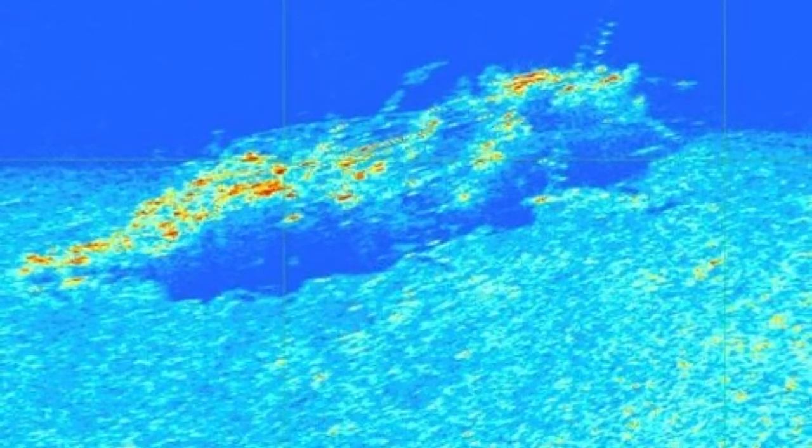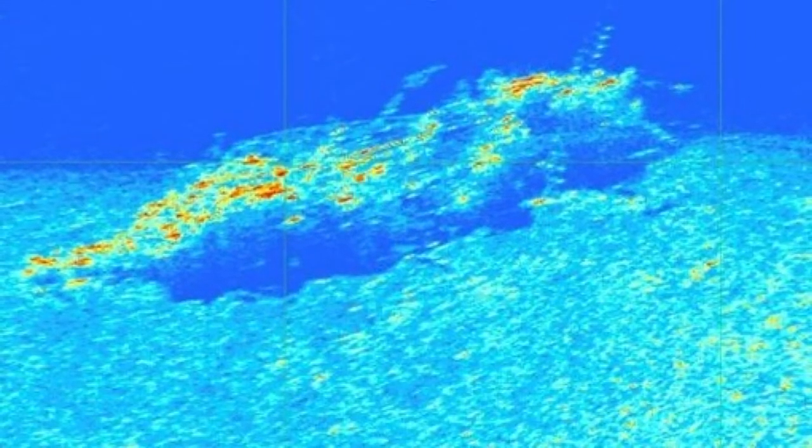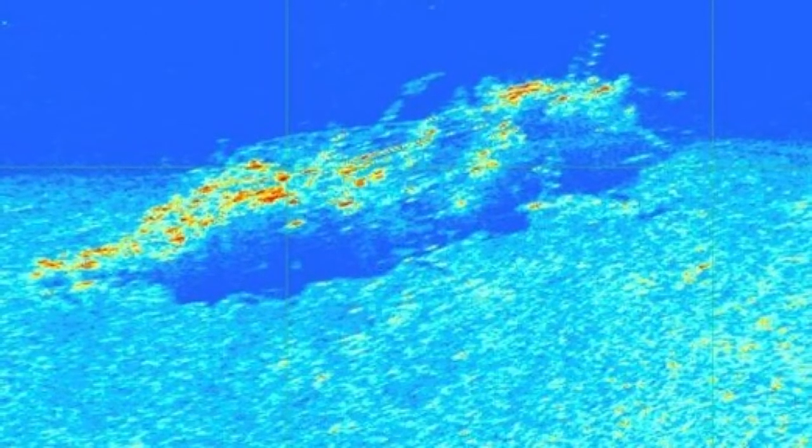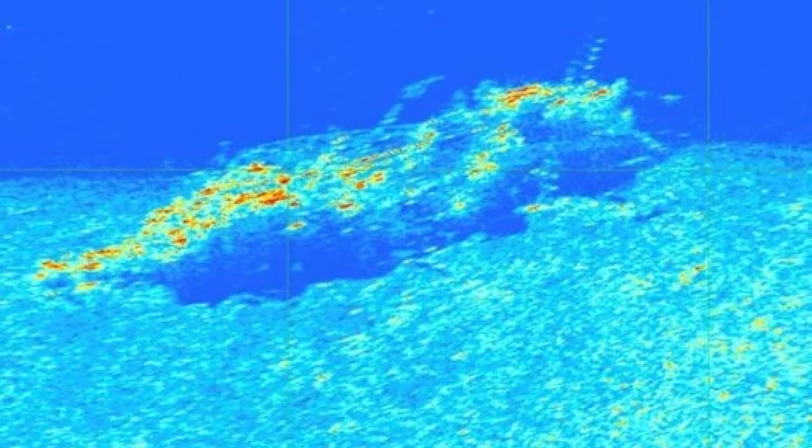Investigators have found the wreckage of that float plane. The NTSB just released these images of the wreckage. It is sitting at 190 feet below the floor of Puget Sound.